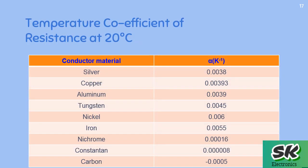These are the temperature coefficients of resistance of various materials, calculated at 20 degrees Celsius, because resistivity is usually defined at 20 degrees. The values of alpha are in units of per Kelvin.